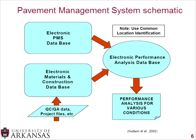This schematic from a report by Hudson shows how a pavement management system works. Starting in the lower left-hand corner, one input is quality control and quality assurance data, and something called project files, which contain information about materials used, pavement structure, and production and construction. To have an effective pavement management system, you need to compile all of that into an electronic database — an electronic materials and construction database. You then combine that with your pavement management system data, showing how the pavement is actually performing.